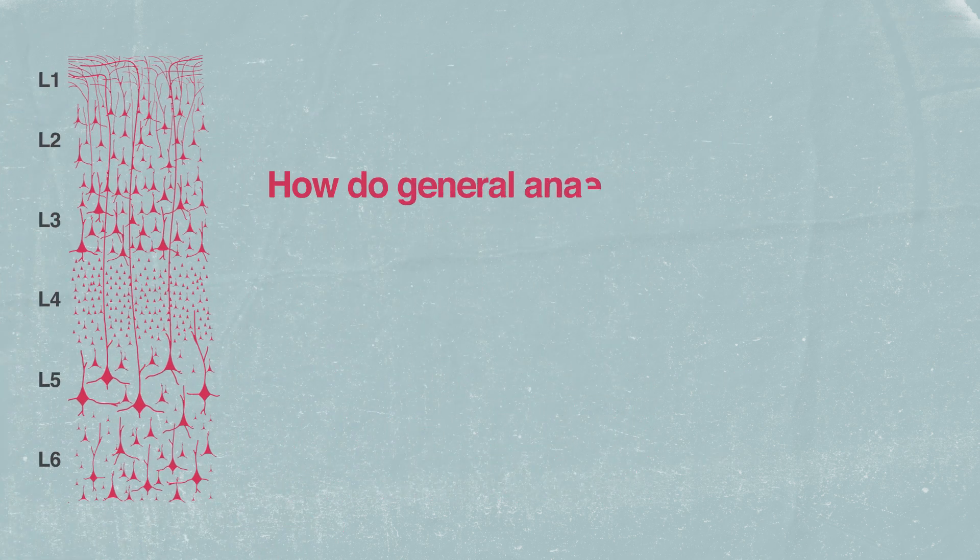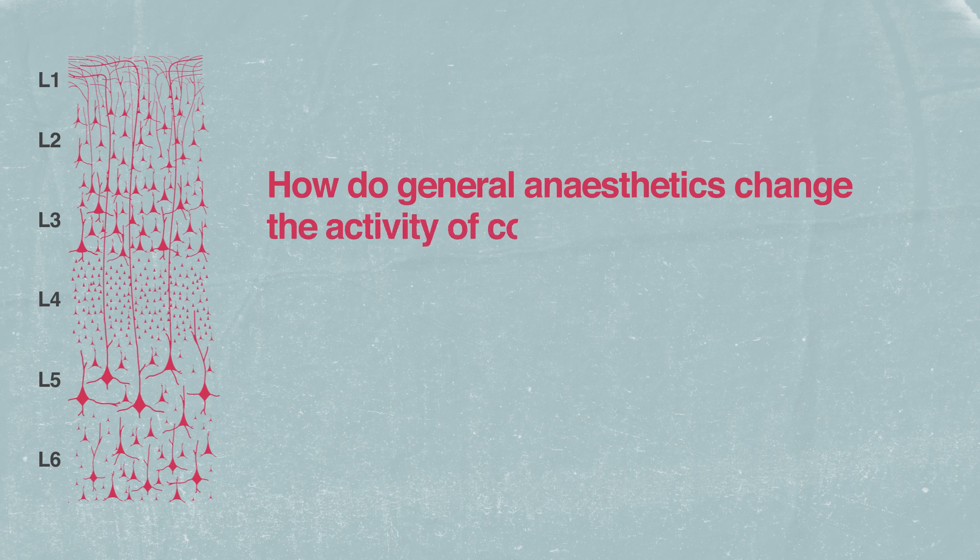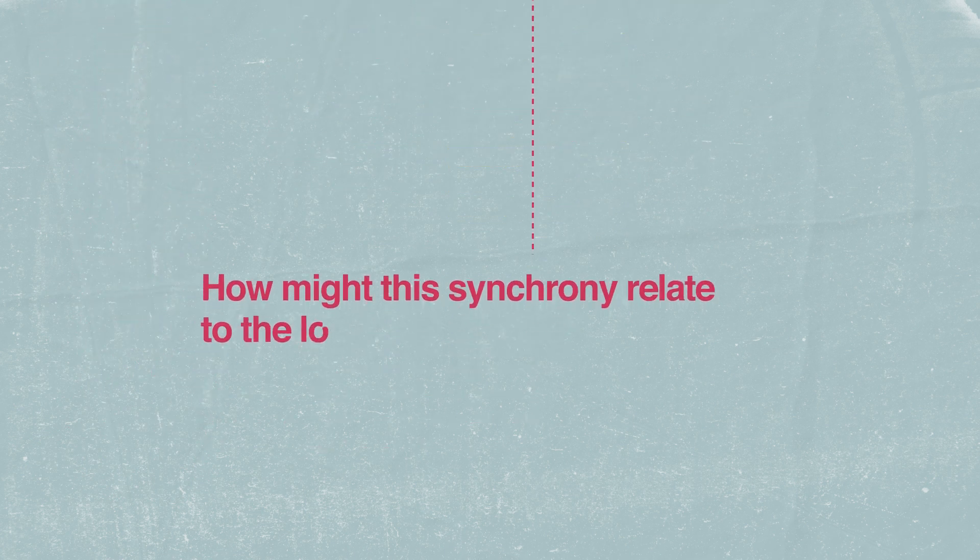How do general anesthetics change the activity of individual cortical cell types, resulting in synchrony? And how might this synchrony relate to the loss of consciousness?